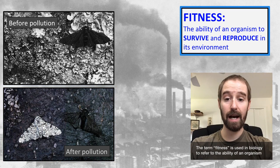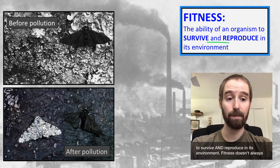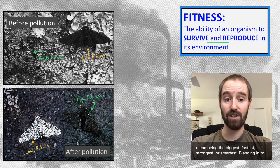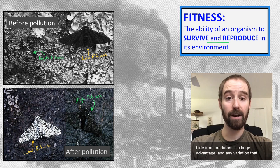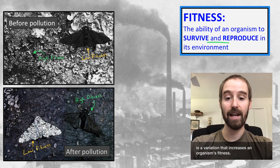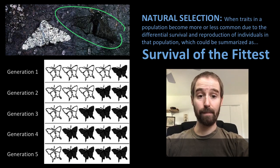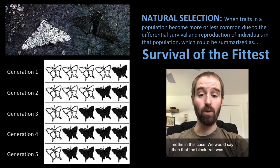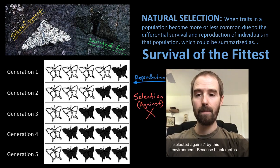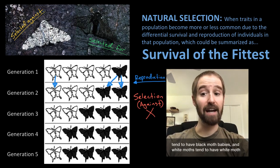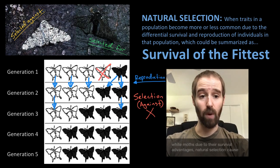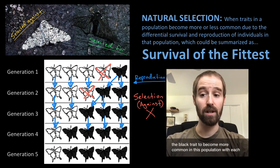The term fitness is used in biology to refer to the ability of an organism to survive and reproduce in its environment. Fitness doesn't always mean being the biggest, fastest, strongest, or smartest. Blending in to hide from predators is a huge advantage, and any variation that increases the likelihood that an organism will survive and reproduce is a variation that increases an organism's fitness. Natural selection favors the fittest organisms in a population — the black moths in this case. We would say then that the black trait was selected for by this environment, while the white moths were selected against by this environment. Because black moths reproduce more than white moths due to their survival advantages, natural selection caused the black trait to become more common in this population with each passing generation. Survival of the fittest.